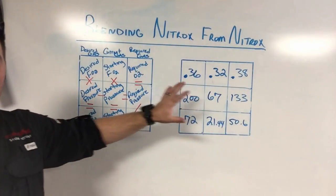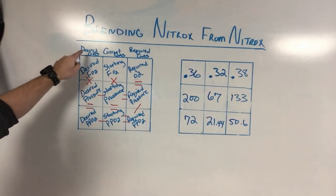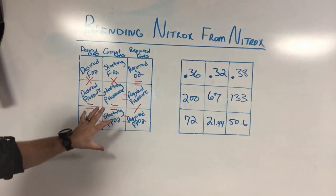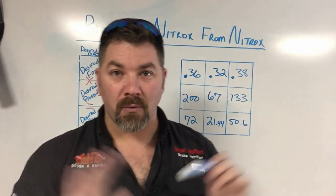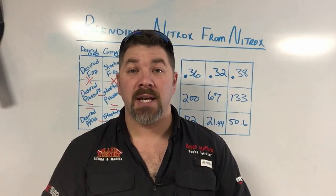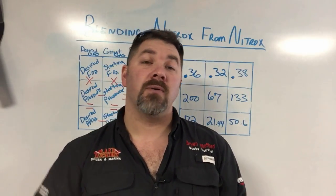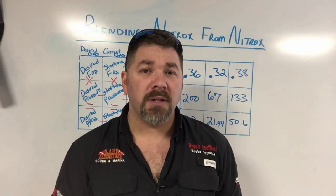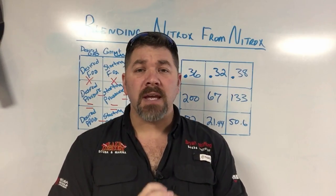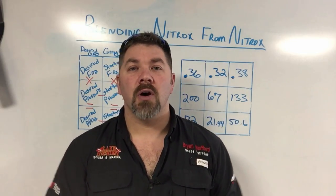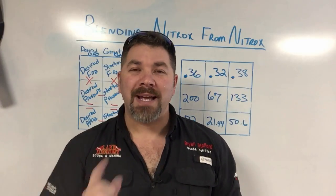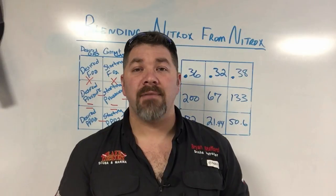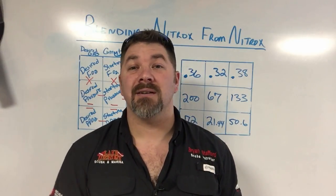It's a very simple process: draw your tic-tac-toe board, remember the first column is desired gas, the middle is current gas, and the last is required gas. Understanding what each block represents, you can take nitrox of whatever blend at whatever pressure and change it to whatever blend and pressure you need — without having to drain the cylinder first to start partial pressure blending. If you have questions, put them in the comments. If you want more technical videos, let me know. Previous videos in the series are linked in the description below.